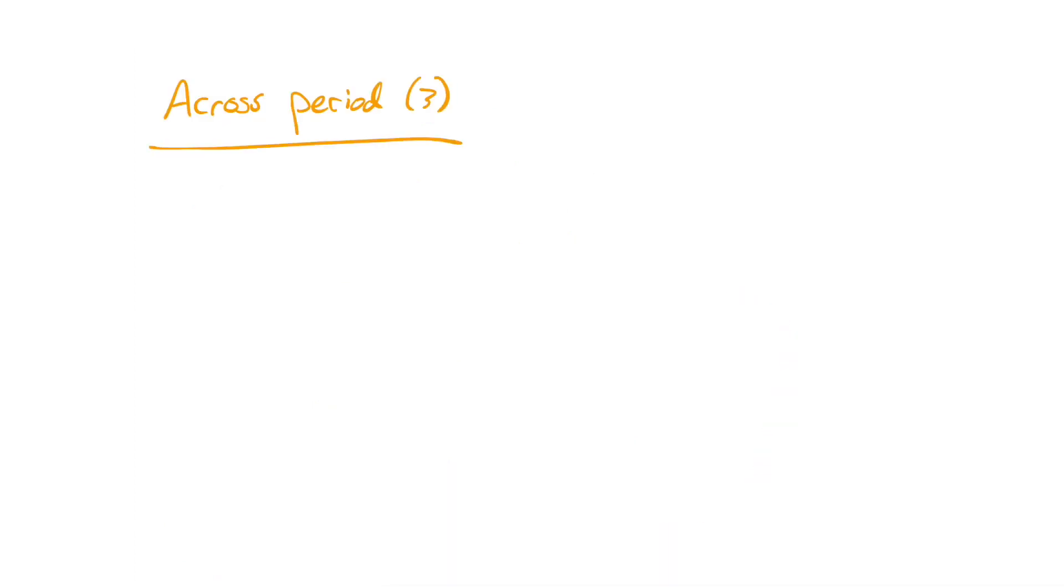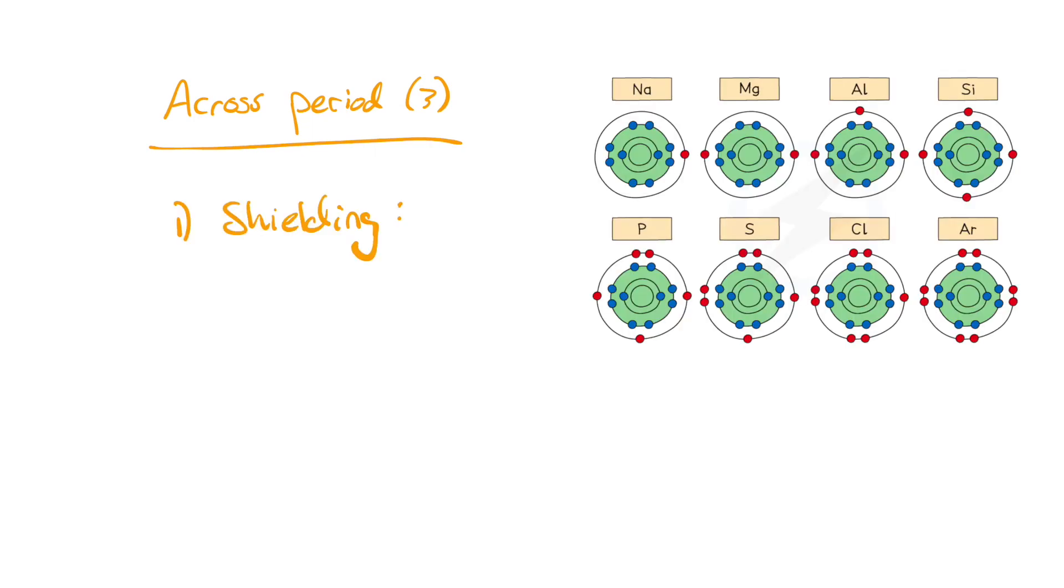I also want you to know about what happens across period 3 or across any period. Again, let's look at what happens to the three factors that affect ionization energy. Shielding stays the exact same. Across the period, they all have the same amount of energy levels, so there's no change. Charge increases by 1 every time. Relative charge, that is. The distance may increase slightly as you go across, however, it stays about the same. Therefore, across a period, ionization energy increases.